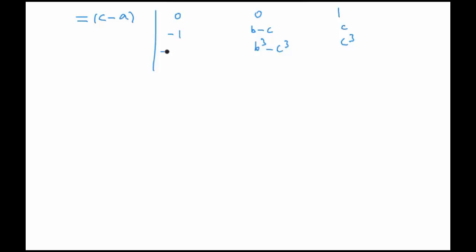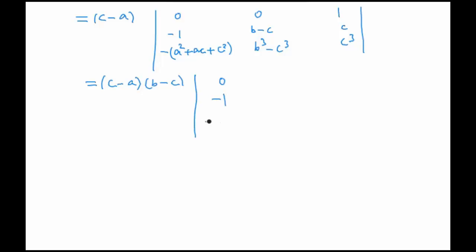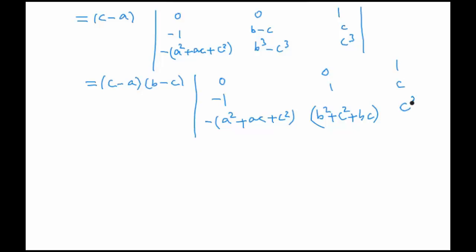Now we take out (b - c) as common from column 2, since we want that factor in the final expression. So we have (c - a)(b - c) factored out. Column 1 becomes [0, -1, a² + ac + c²], column 2 becomes [0, 1, b² + bc + c²], and the third column [1, c, c³] remains as is.